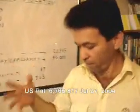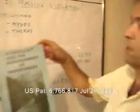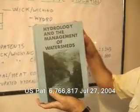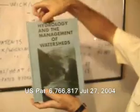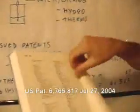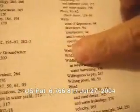When you go to hydrology, you get a book like this one — Hydrology in the Menu of Watersheds. You go to the back here, to the index. You don't see anything about WikiWiki. You see wildlife. Hydrology doesn't talk about WikiWiki.